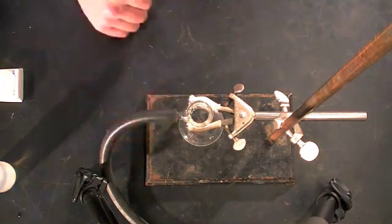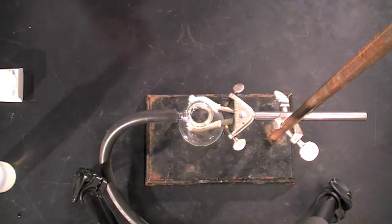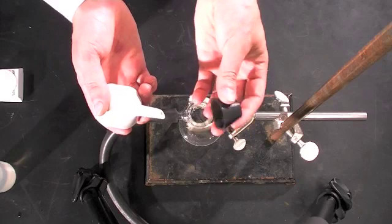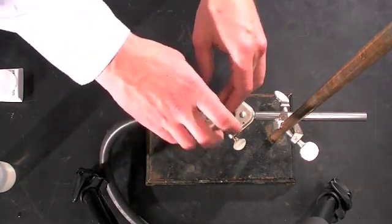This is your Buchner funnel. It has a little rubber washer that works to create a tight seal with the flask.